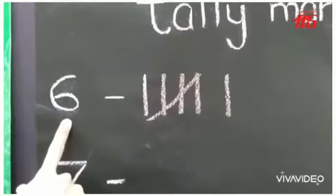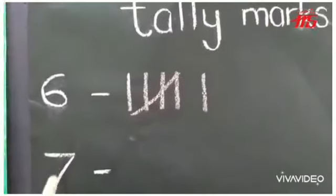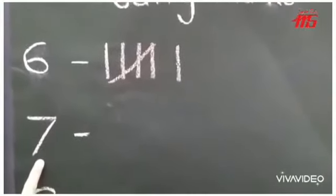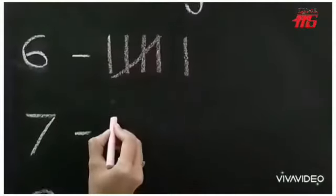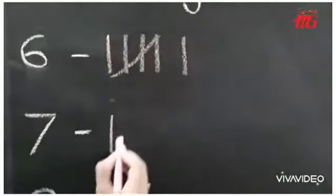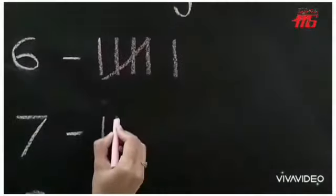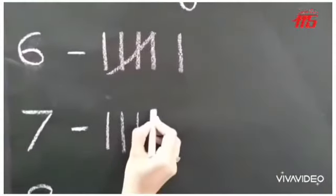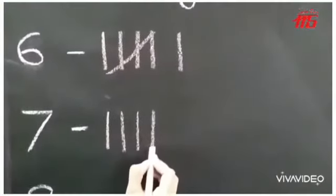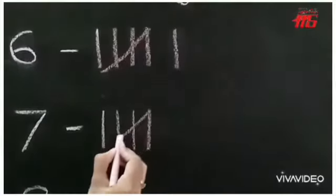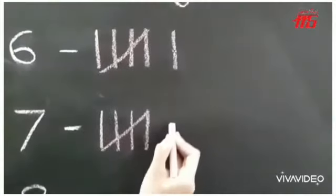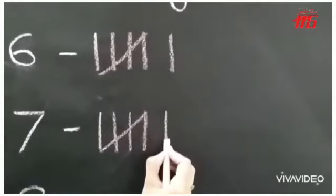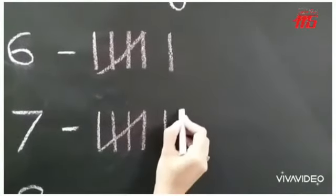Now let us show the tally marks for number 7. Are you all ready? Come on. 1, 2, 3, 4 — number 5 shuts the door. Again we are going to leave a little space and show 6, 7.